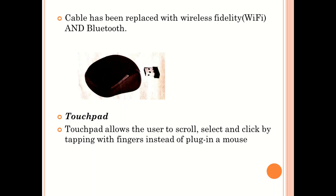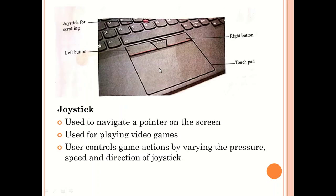Then we go to the touchpad. Someone can operate the computer by just using the touchpad. The touchpad is the smooth area here — the moment you start moving your hand on this smooth area, you'll be able to see the insertion point on your screen start moving towards the position that you want. It also has a left button and a right button, as well as a joystick for scrolling.